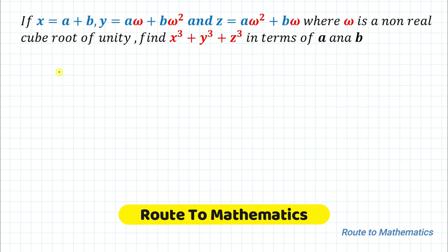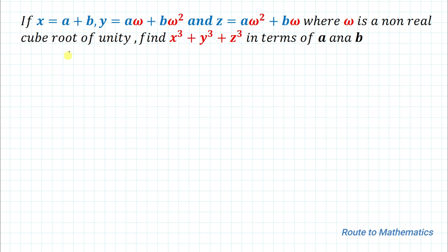Hello everyone, welcome to Root 2 Mathematics. In this video we're going to solve an interesting algebraic question. The given question is: if x equals a plus b, y equals a·omega plus b·omega squared, and z equals a·omega squared plus b·omega, where omega is a non-real cube root of unity, then find the value of x cubed plus y cubed plus z cubed in terms of a and b.